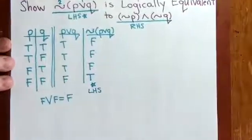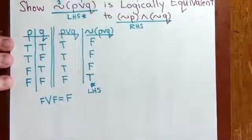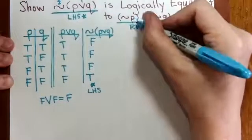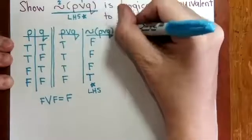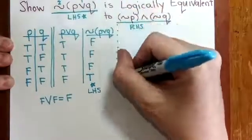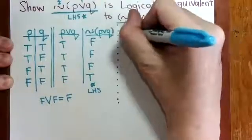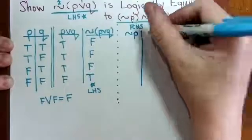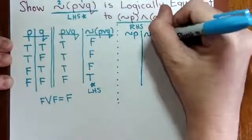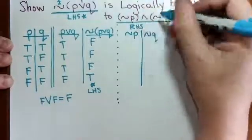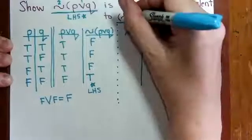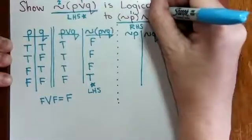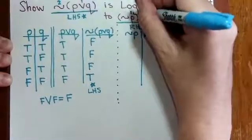Now let's take a look at the right-hand side. The right-hand side requires a NOT P as well as NOT Q. So we'll first negate P, then negate Q, then we will AND those results.